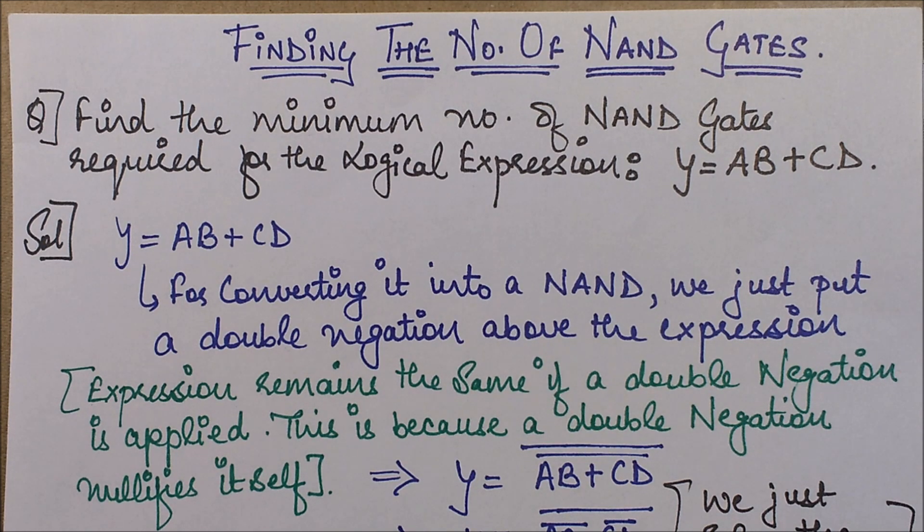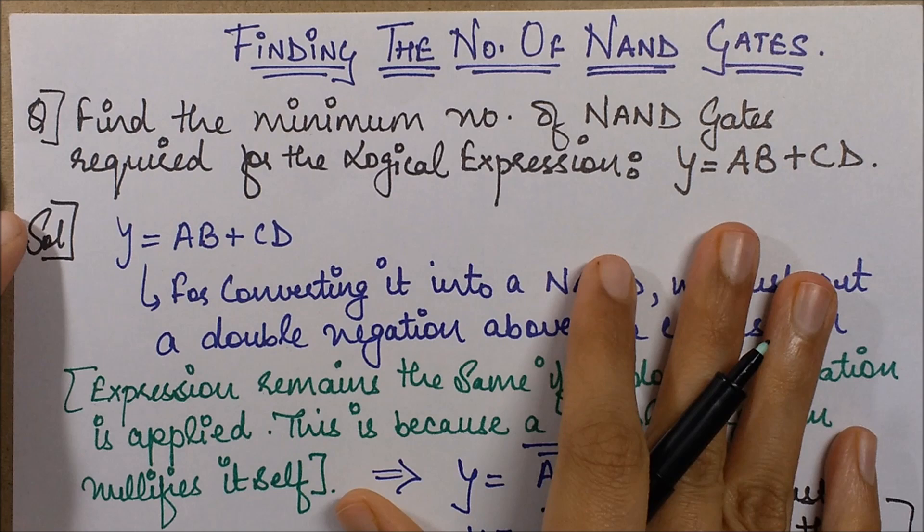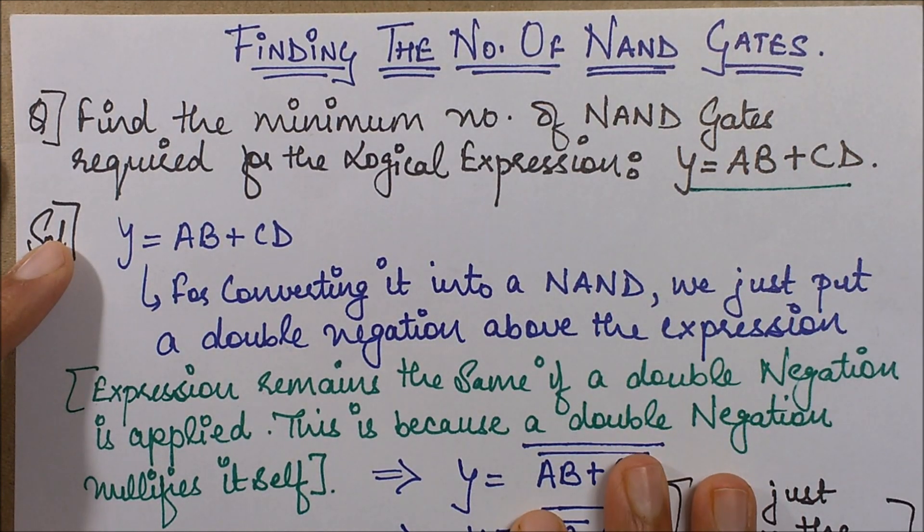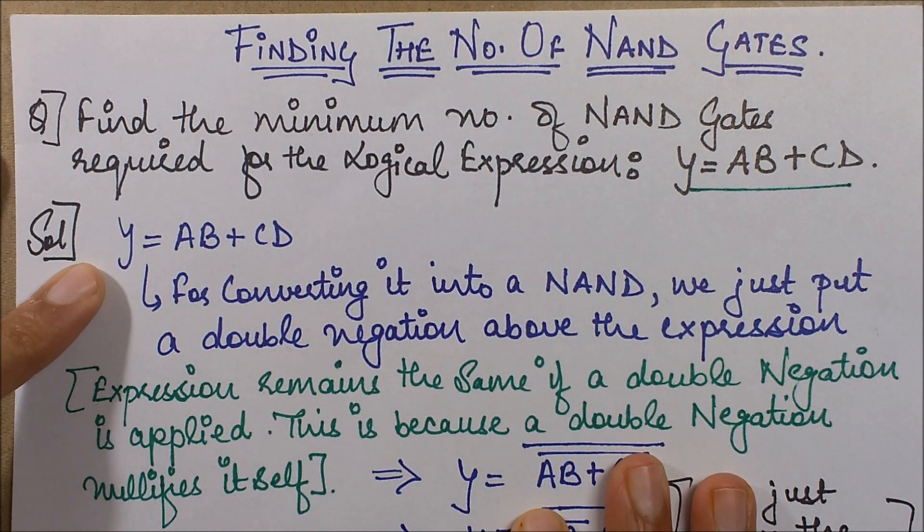What is the logical expression that we have for this question? We have the logical expression as Y equals AB plus CD. So this is the logical expression over here.